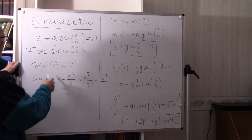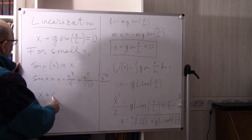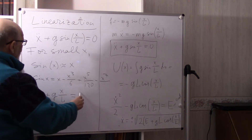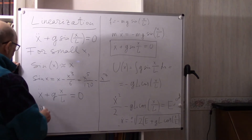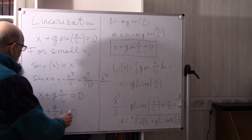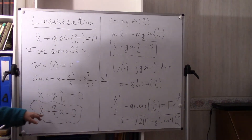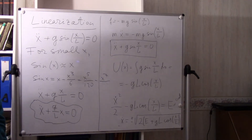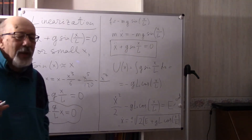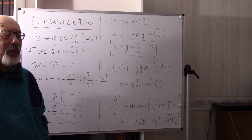If we replace sine(X) by X, we get: X double-dot plus G divided by L times X equals 0. This is a linear equation with constant coefficients, which we can easily solve. This operation — taking a nonlinear equation and replacing it approximately with a linear one — is called linearization. After linearization you have a much simpler equation whose solution gives the first approximation to the true solution.